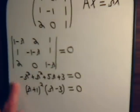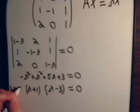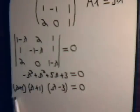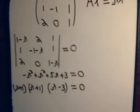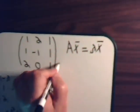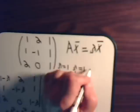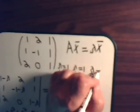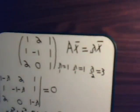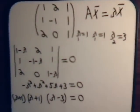Multiply both sides of the equation by minus 1 to simplify. So we have lambda equals minus 1, lambda equals minus 1, and lambda equals 3. We have three eigenvalues but only two different ones: lambda 1 equals minus 1 (repeated) and lambda 2 equals 3.